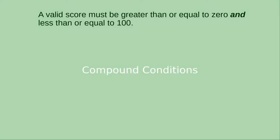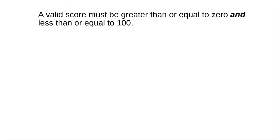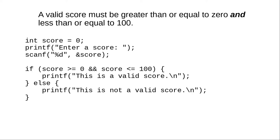Sometimes you need to test more than one condition at a time. As in this example, where a valid score must be greater than or equal to zero and less than or equal to 100. Here's how you write that in C.